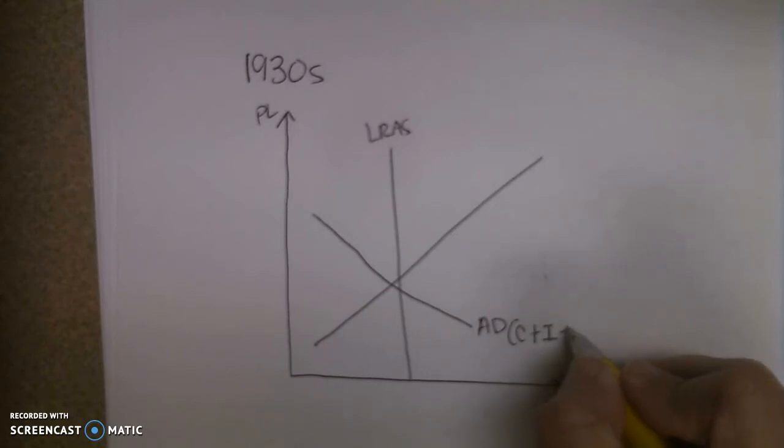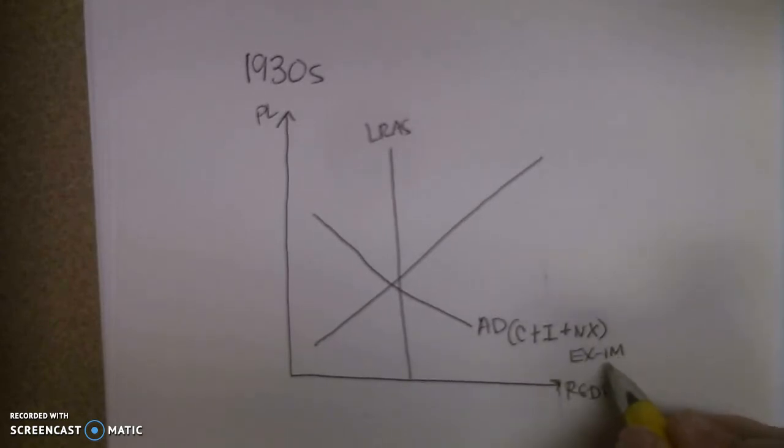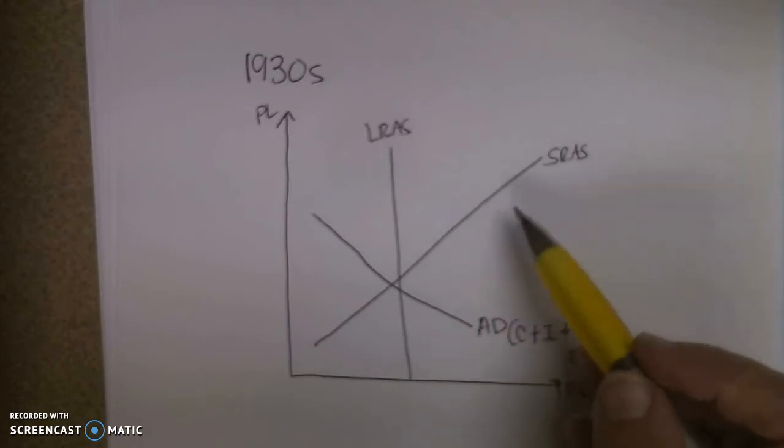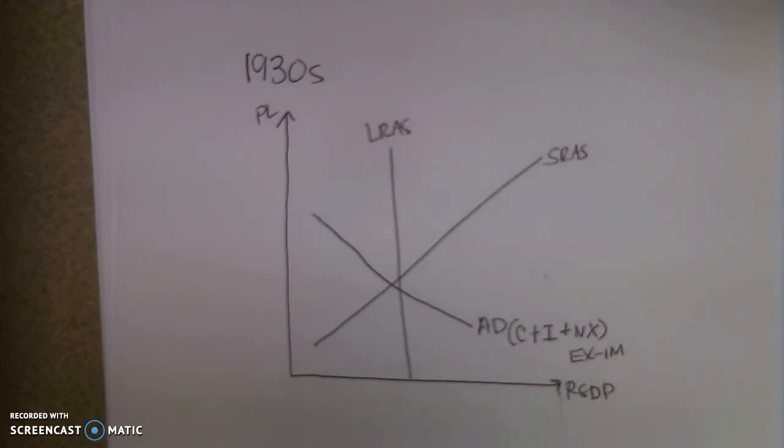Instead, for the first time, we started adding in net exports. And remember, if we look at net exports, that is exports minus imports. So it's what we're sending outside of our country produced in here, minus what we're purchasing that was purchased outside of our country. Remember, this is a short run aggregate supply curve. For this example, that's not going to change very much, but we have a slight recessionary gap.